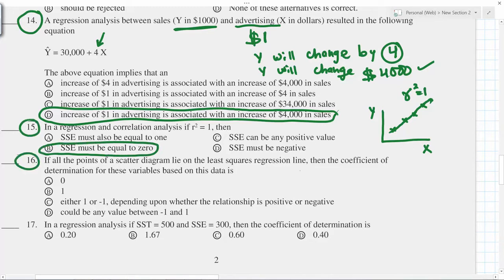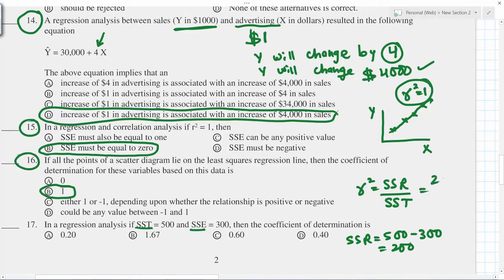If all points lie on the line, then coefficient of determination, which is r square, is one. In a regression analysis, you have SST, SSR, and r square equals SSR divided by SST. So SSR will be 500 minus 300, which is 200 divided by 500.